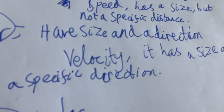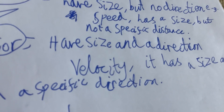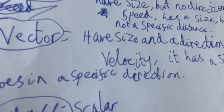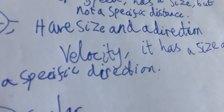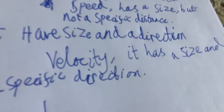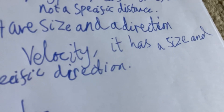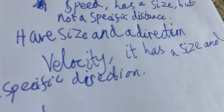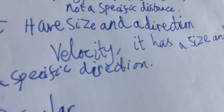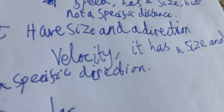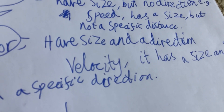A vector has both size and direction. Velocity would be a vector because it has size and a specific direction — velocity is basically speed given in a specific direction. I hope you learned something!